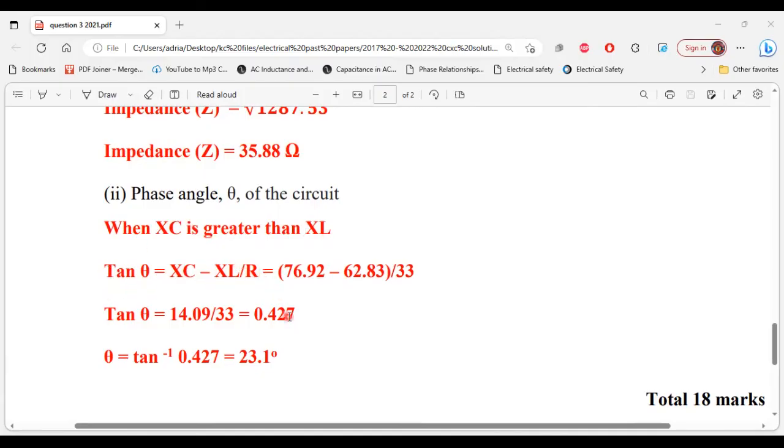So that is (76.92 - 62.83) divided by 33, that will give us tan θ equal to 14.09 divided by 33, equal to 0.427. Therefore, the angle which is θ is equal to tan⁻¹ 0.427, is equal to 23.1 degrees.